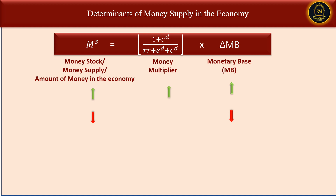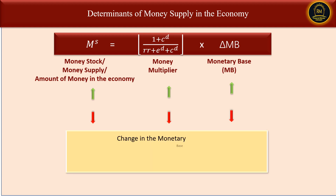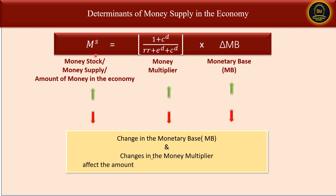In the same way, if there is an increase in the money multiplier, it would increase the money supply. If there is a decrease in the money multiplier, it would decrease the money stock in the economy. So any change in the monetary base or change in the money multiplier affects the amount of money stock in the economy.